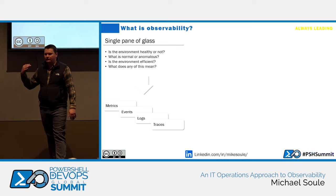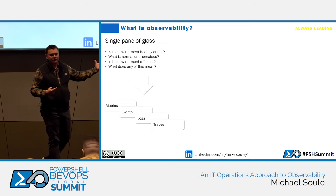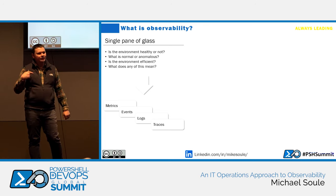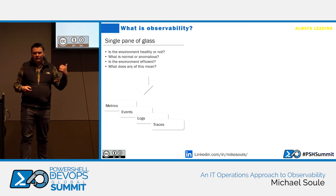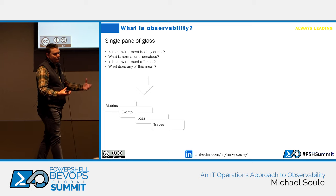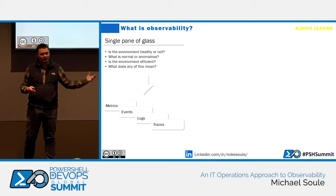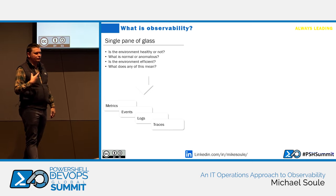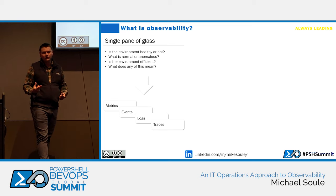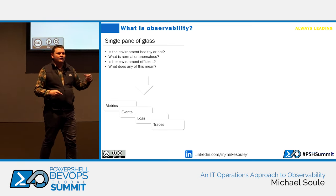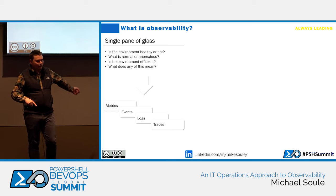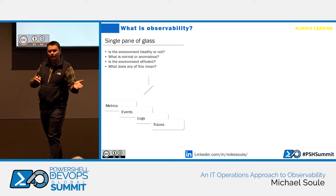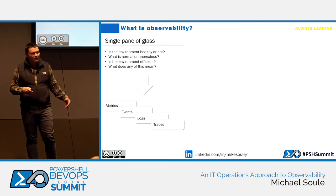When we think about observability, there are four real components that always come up — MELT: metrics, events, logs, traces. Metrics are the discrete values over time we like to measure. Events are things that application developers create to say what's happening in our environment, and logs are where we aggregate those events. Traces become very critical in distributed computing environments — if I'm querying system A and it's processed by database B through load balancer Z, I need to correlate that between systems to understand where transactions end up.